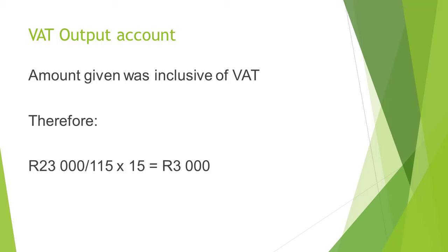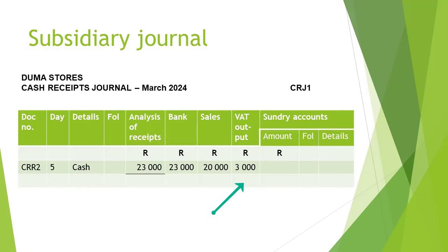The last account affected is the VAT output account. The calculation is R23,000 divided by 115 times 15, which equals R3,000. The amount of R3,000 will be written into the VAT output column. Since accounting works on a double entry principle, if you look at this entry in the cash receipts journal, you will see the bank account — which would have been debited — is equal to the sales account plus the VAT output account, which would have been the two accounts credited on the accounting equation.